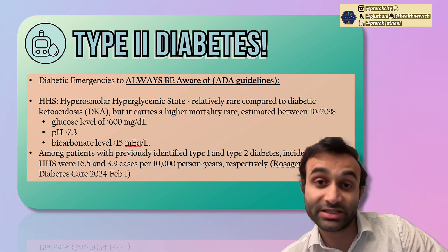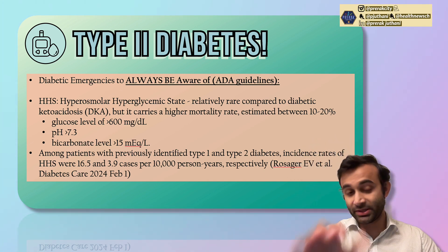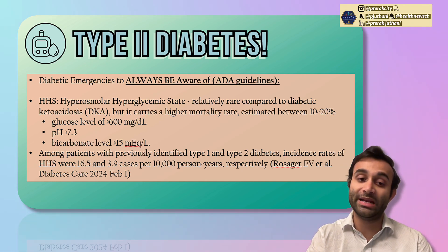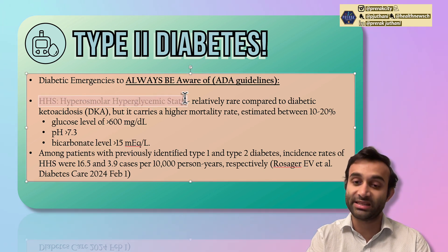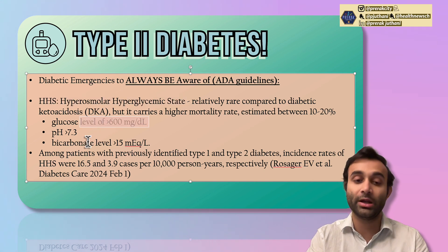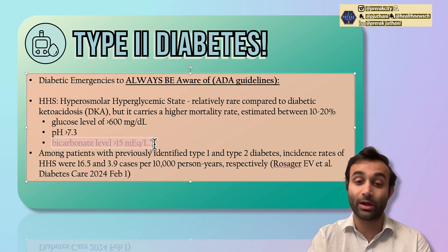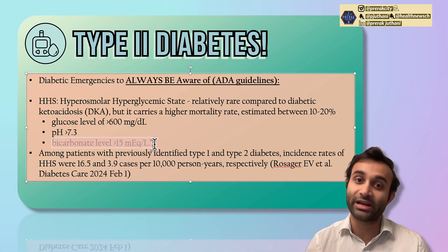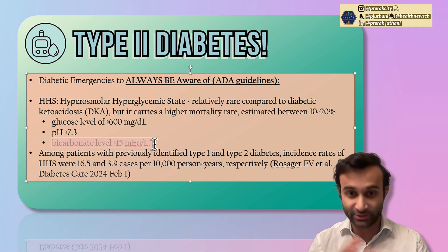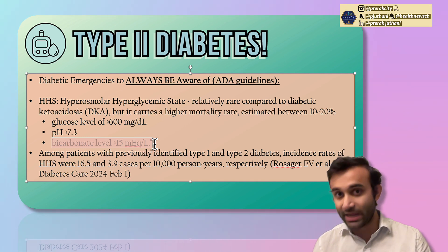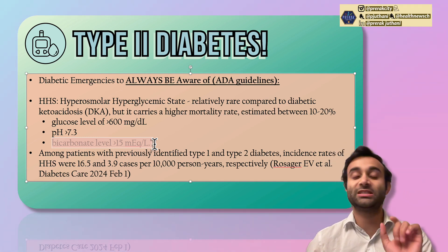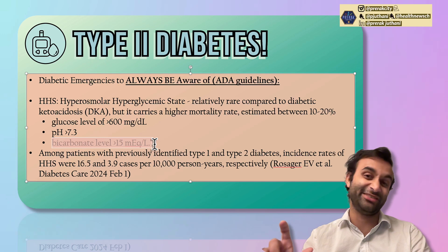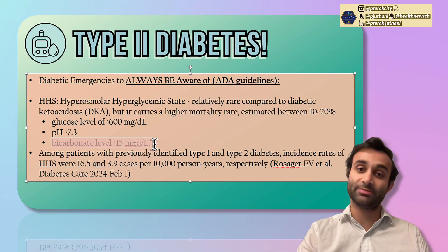Now let's talk about diabetic emergencies — things to be aware of when someone has type 2 diabetes. The two main ones are HHS and DKA. HHS, hyperosmolar hyperglycemic state, is when you have a blood glucose level above 600, a pH greater than 7.3, and a bicarbonate level above 15 to 20. It's called hyperosmolar because so much glucose increases the osmolarity of your blood. The reason it's not DKA is because the pH is above 7.3 and the bicarbonate is not significantly lower than 15 to 20, meaning there's no true acidosis. It's very dangerous because with that high level of glucose, you'll be peeing out so much that you're at very high risk of dehydration and it has a very high mortality rate.